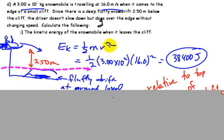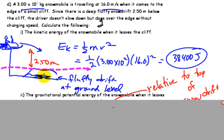So leaving the cliff, the guy is going at 16 meters per second. So using the kinetic energy equation, you can see the nice fluffy snow drift I drew there. So one-half times 300 times 16 squared, 38,400 joules.